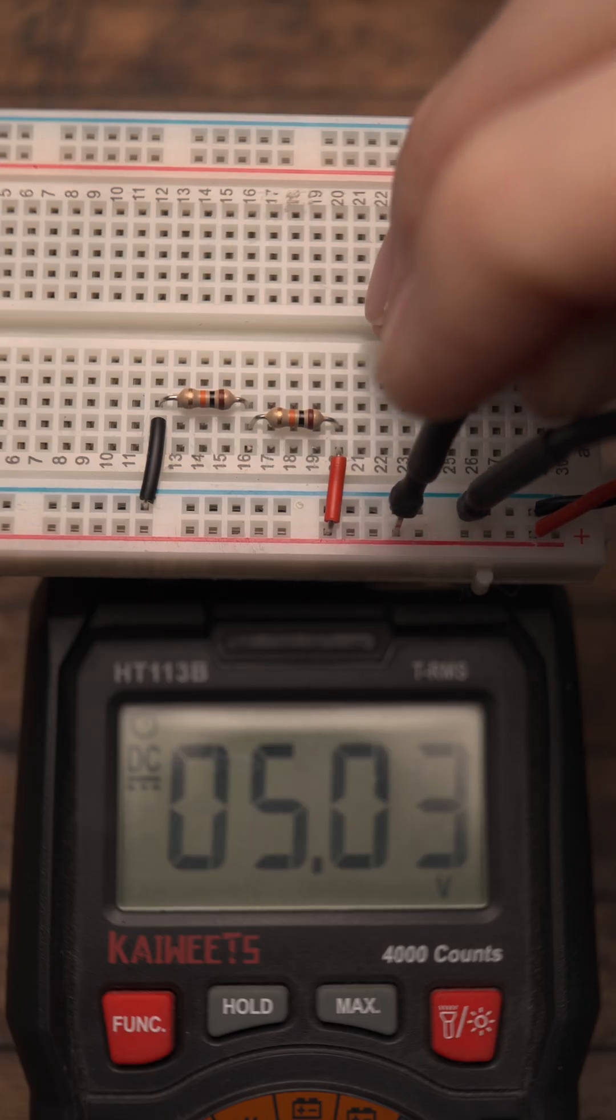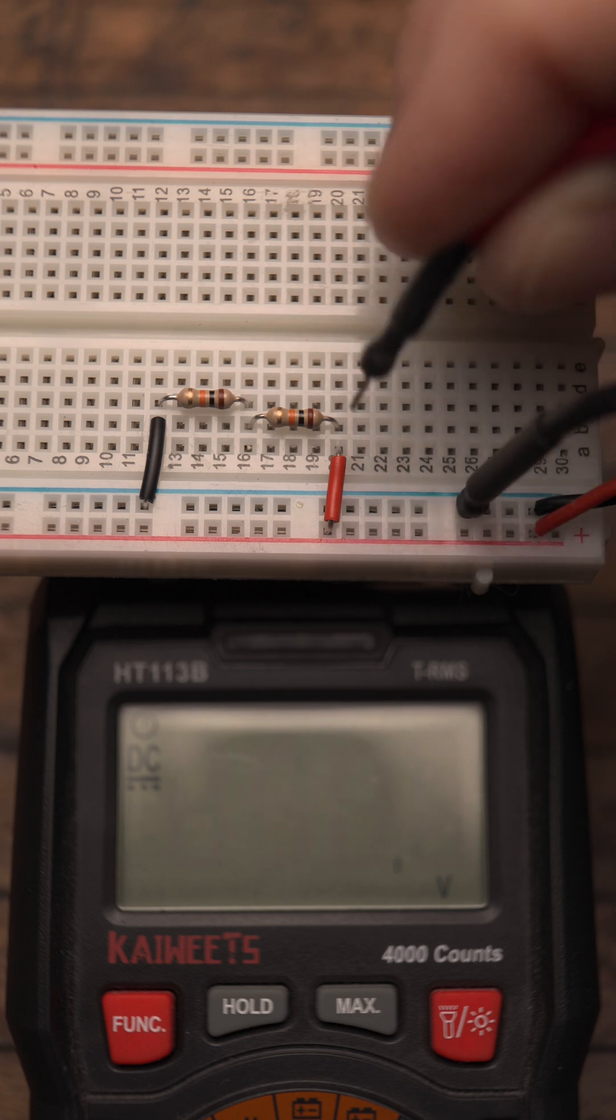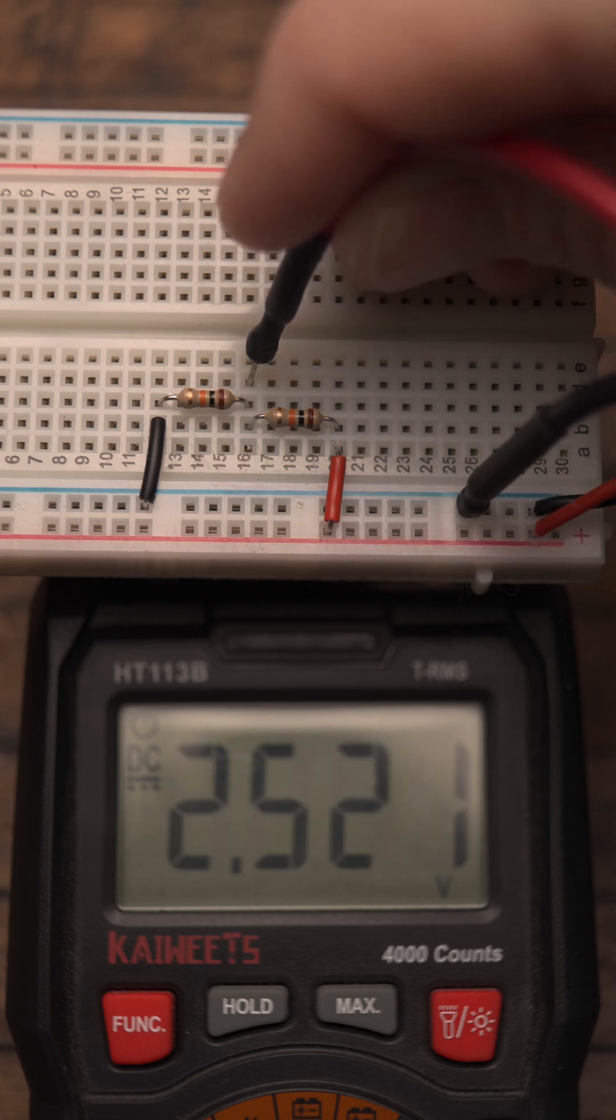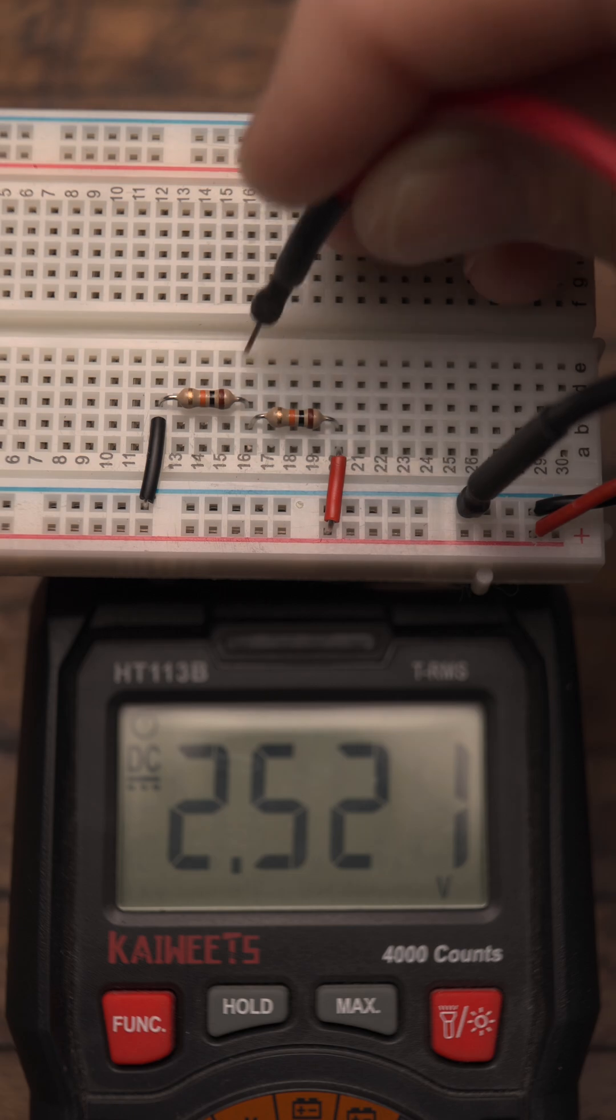This is a way to use resistors to set a specific voltage. If we start with 5 volts and measure in between the 10K resistors, we get half of the source voltage.